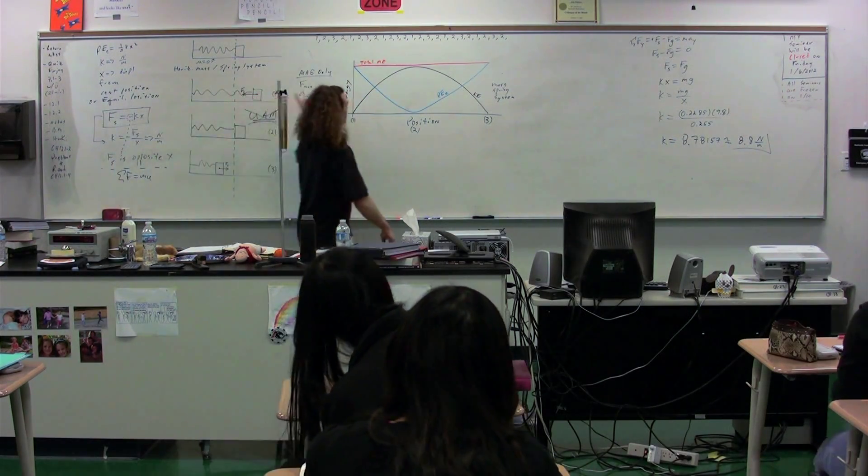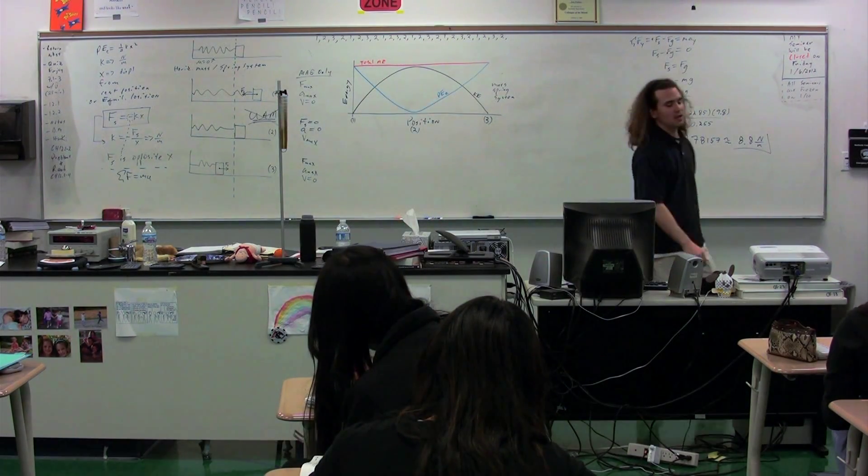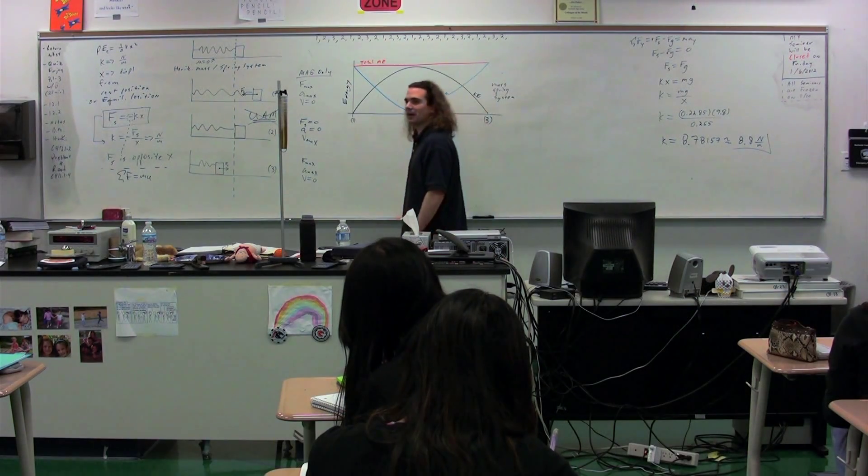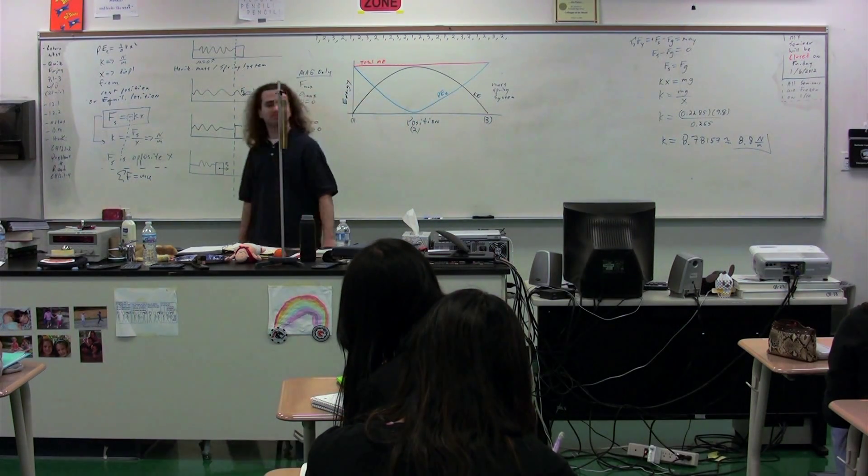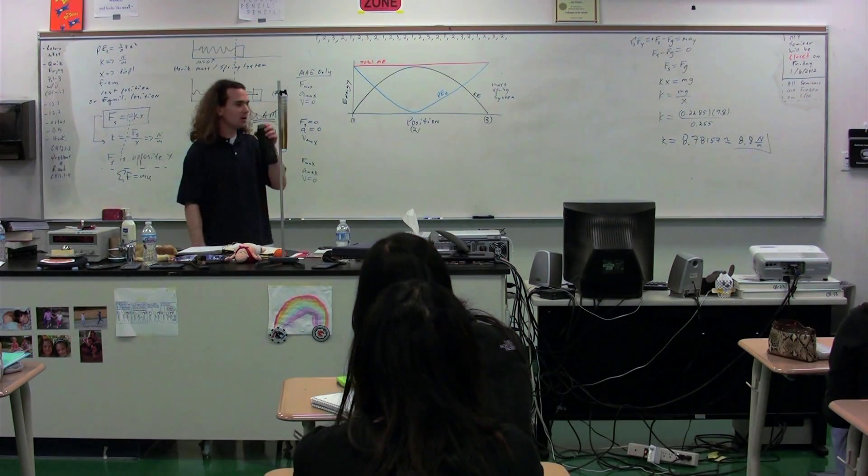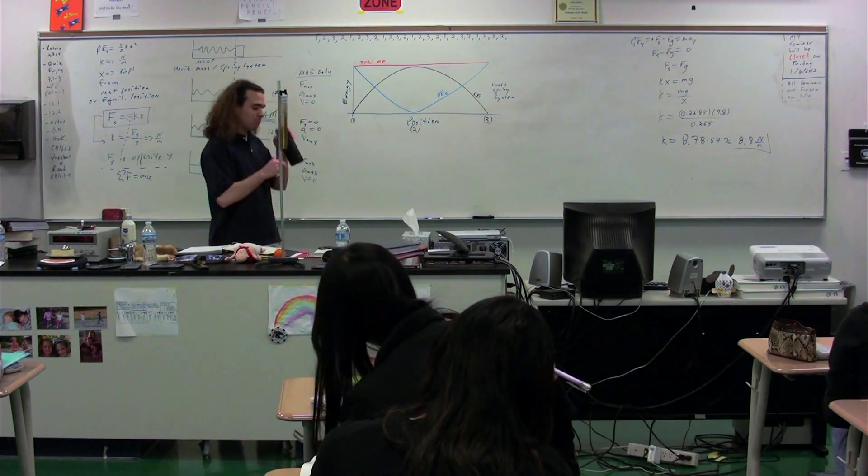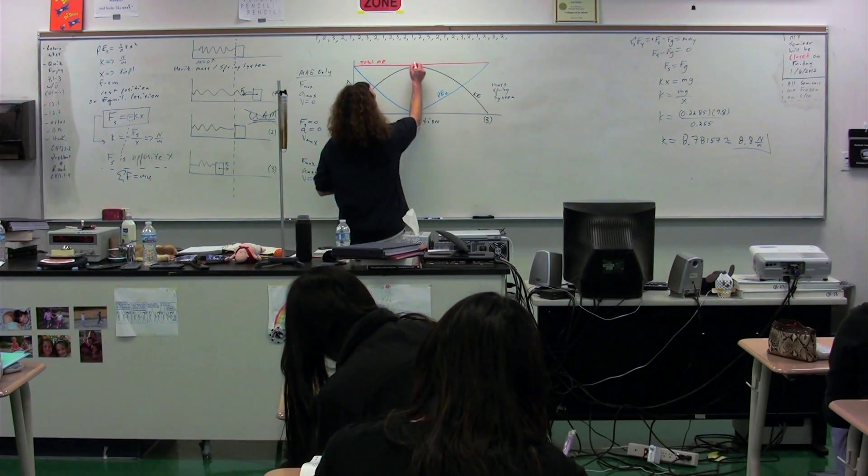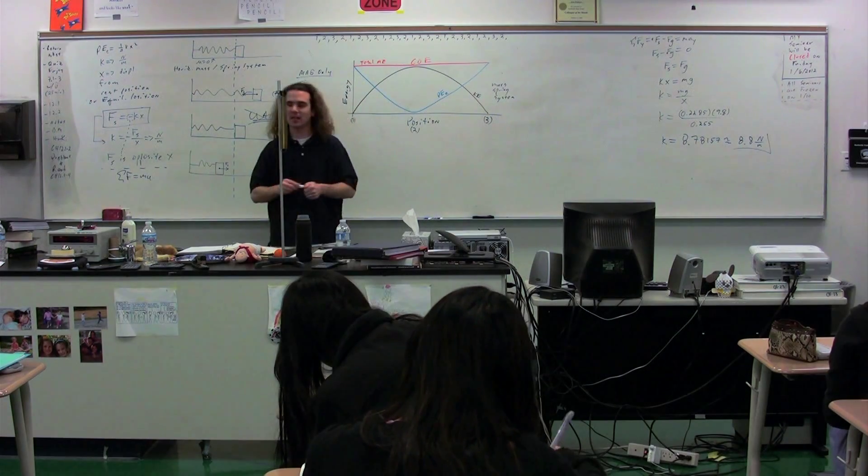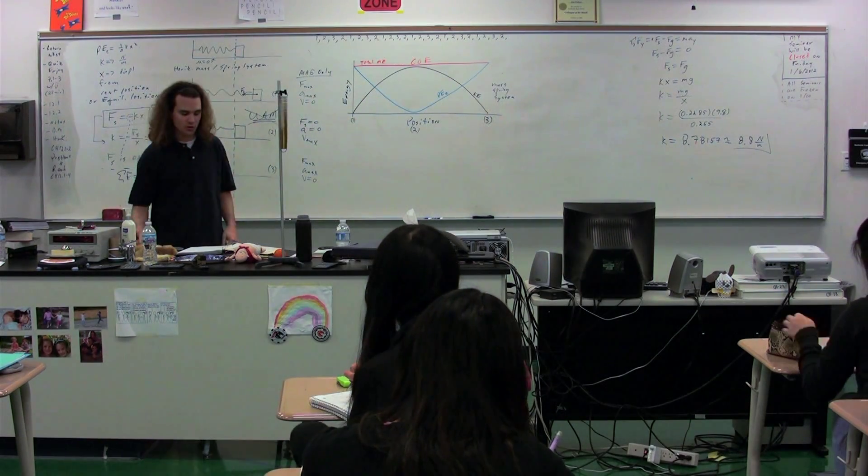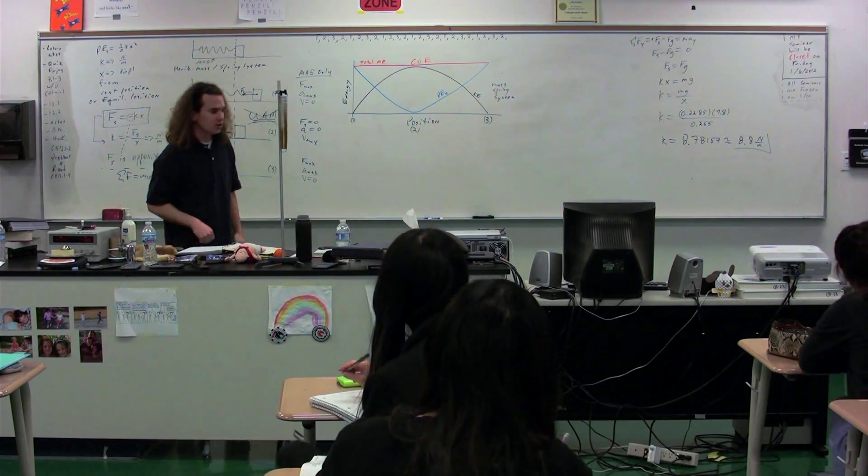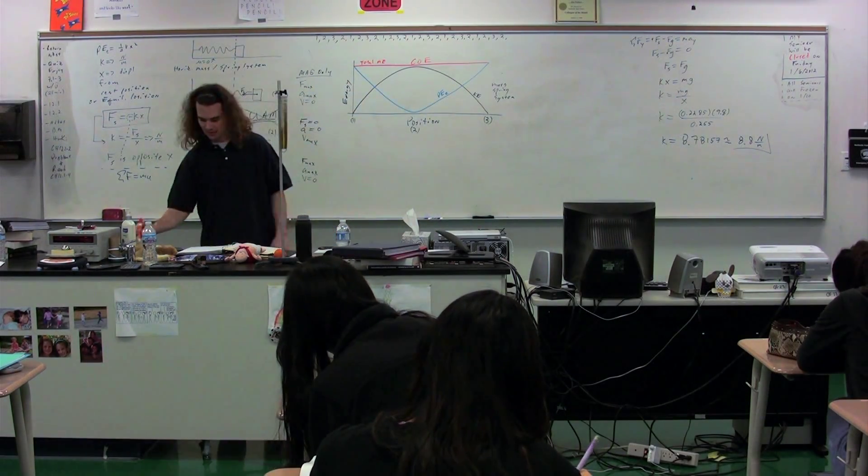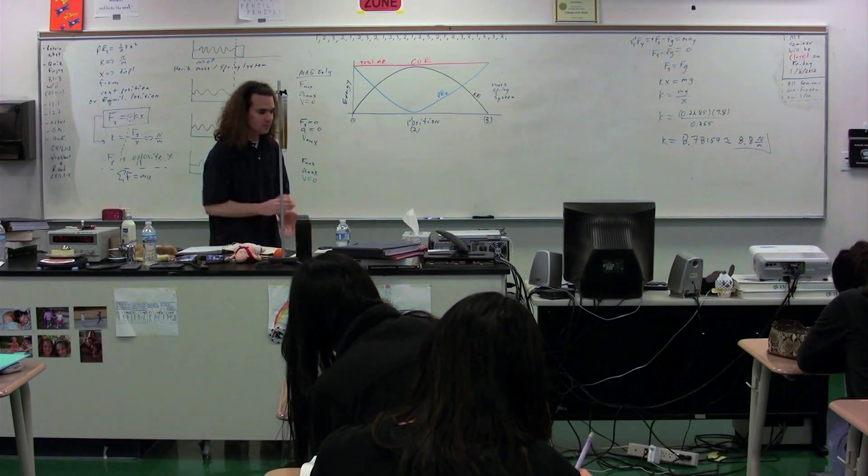The line across the top is total mechanical energy, and this represents what major concept in this class? That line represents that the total mechanical energy is conserved. It never changes, it always has the same value. So with simple harmonic motion, you can talk about conservation of mechanical energy because there's no friction, so mechanical energy is conserved.